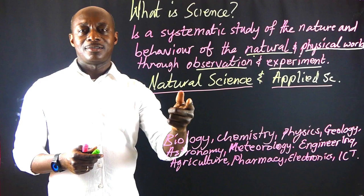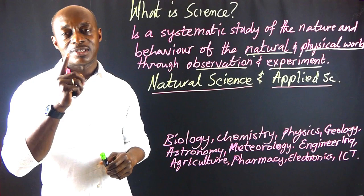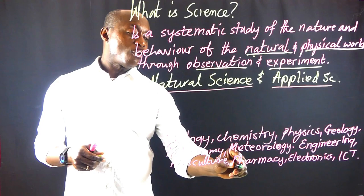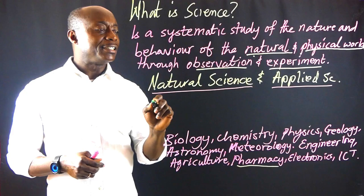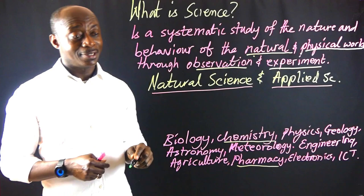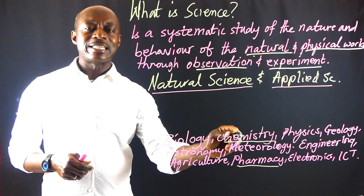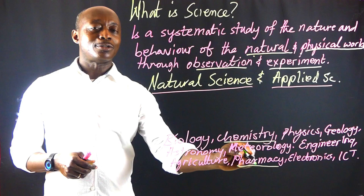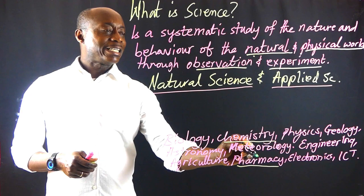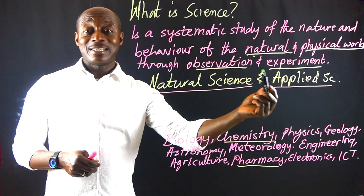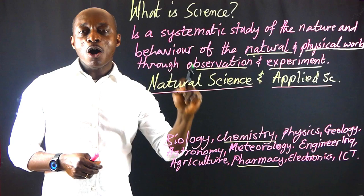For instance, if anyone wants to be involved in pharmacy, that person must have knowledge in chemistry. In other words, one ought to apply the knowledge acquired from chemistry in order to do pharmacy. So pharmacy is a typical example of applied science. When we say applied science, as the name implies, it involves the practical application of scientific knowledge gained from one of the natural sciences.